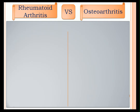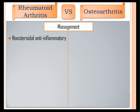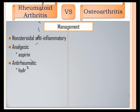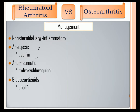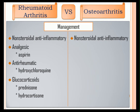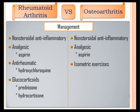Management under rheumatoid arthritis: non-steroidal anti-inflammatory drugs to lessen inflammation and pain; analgesics like aspirin; anti-rheumatic drugs like hydroxychloroquine; and glucocorticoids like prednisone and hydrocortisone, since sometimes it is caused by an infection like group A beta-hemolytic streptococci. Management under osteoarthritis: same — non-steroidal anti-inflammatory drugs to lessen inflammation and pain; analgesics like aspirin; isometric exercises; avoid certain exercises like jogging, jumping, or lifting as these increase pressure on the joints; and provide passive ROM exercises to maintain joint mobility.